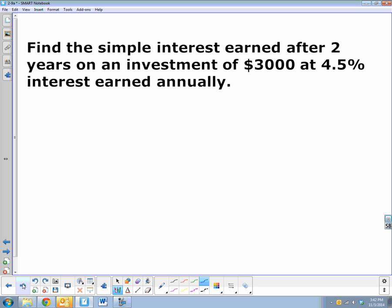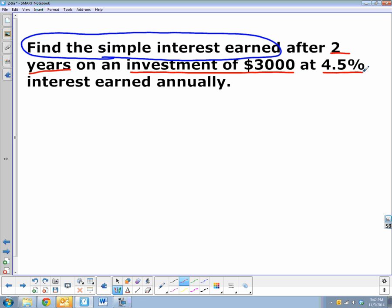Last one here. Find the simple interest earned after 2 years on an investment of $3,000 at 4.5% interest earned annually. So we don't know the simple interest earned. That's our question, find the simple interest earned. We do know the years, two years, so we know time. We know the principal, $3,000. And we know the rate, 4.5%.